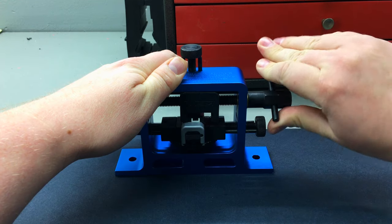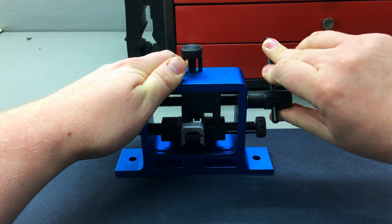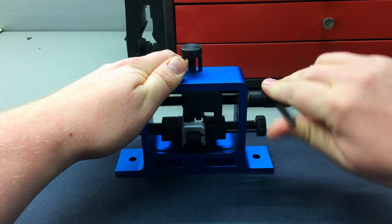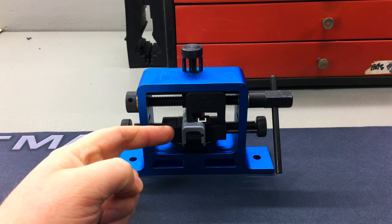Now on these polymer Glock sights here, these are pretty easy to move. Steel or aluminum sights can be a little bit harder to adjust, but you just want to go slow and take your time with it and just work this right out of your dovetail.